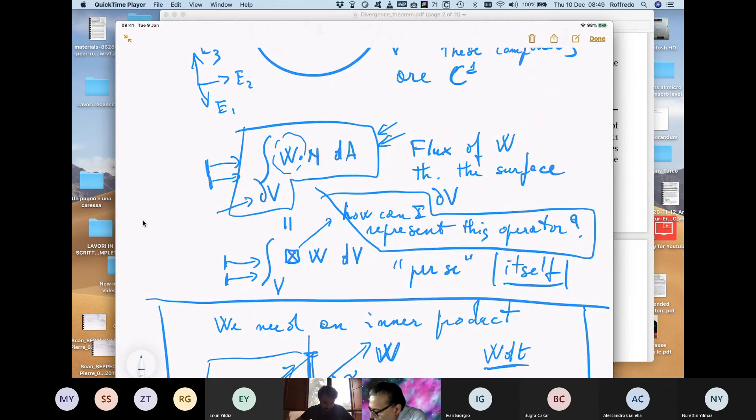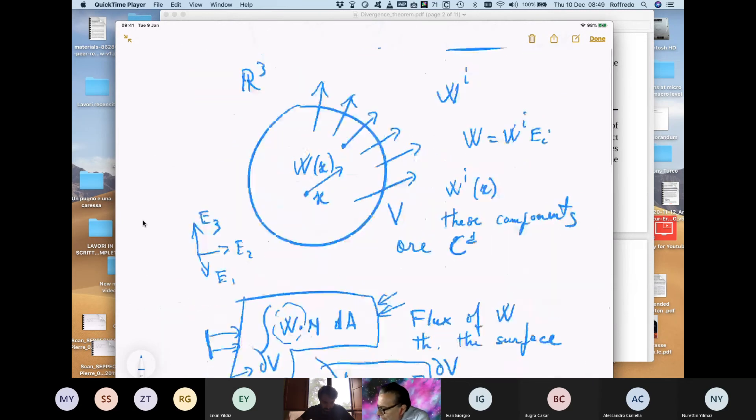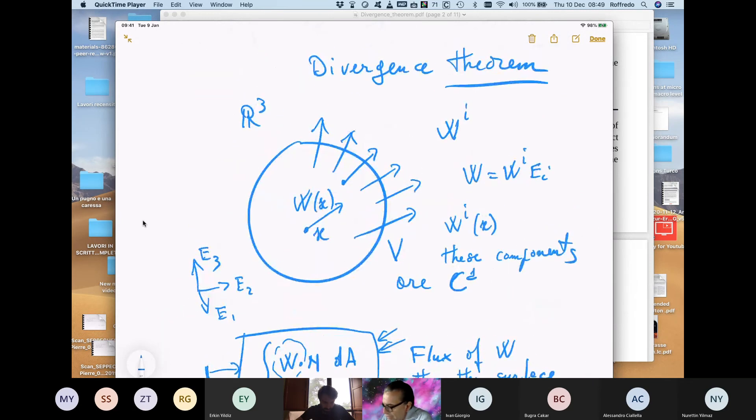So even if we give a justification from fluid dynamics for this, what we want to do now, we want to study this mathematical relationship where W is not a velocity field. It is a generic field.